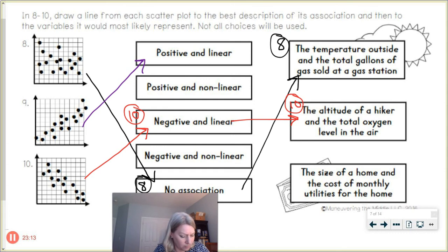And then our last one, let's see, the size of a home and the cost of monthly utilities for the home. Now utilities is like heating and electricity that you need in your home. Sometimes they consider water as a utility as well. So of course, if you're using more electricity, water, heating, the cost of that's going to go up. So that's increase, increase. So that would be a positive correlation or association. So that would be number nine. So positive and linear. So up here was number nine and down here would have been, oops, would have been number nine.